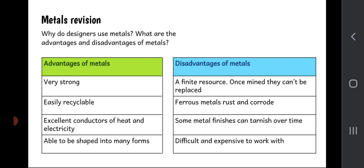Let's start with metal revision. Why do designers choose to use metals? What are the advantages and disadvantages? There are a number of advantages: metals are incredibly strong — that's why we can build battleships, buildings, stadiums, and airplanes with them. They're very easy to recycle; pretty much all metals can be melted down and reshaped. Metal is an excellent conductor of heat and electricity, allowing both to pass through with ease. Metals can also be shaped into many different forms — moulded, extruded, bent, hammered, flattened, forged.